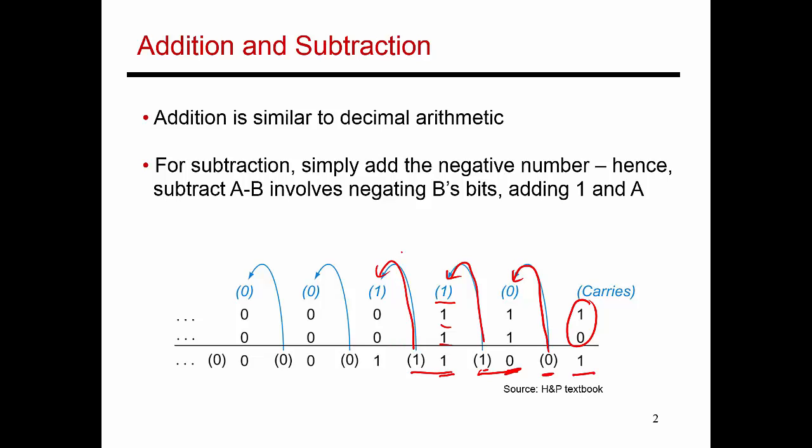So this is a very basic algorithm. If I'm doing a subtraction — let's say I'm doing A minus B, and I'm given the value of B — then this is nothing but an addition of A with minus B. So I essentially need to take the representation for minus B, which is nothing but flipping the bits of B and adding 1 to it.